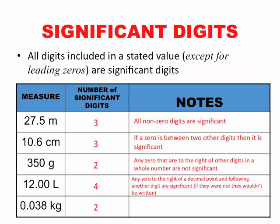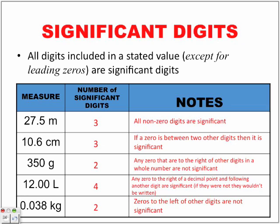0.038 kilograms has two significant digits. Only the three and the eight represent significant digits. Zeros to the left of other digits are not significant. So remember, if we start off with zeros, we can have a whole bunch of zeros at the start. 0.000098 - only this 98 are considered significant digits. All these zeros just are there to represent size. So if the zeros are only there to represent size of a number, they are not considered significant.